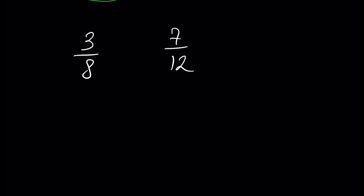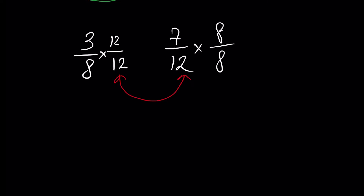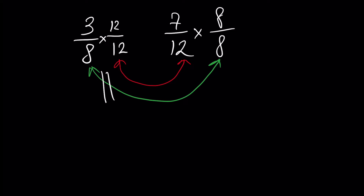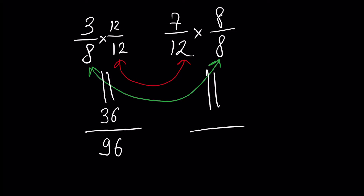That's why we multiply the first fraction — both numerator and denominator — by 12. We multiply 8 by 12 and also 3 by 12. The second fraction is multiplied by 8 — both numerator and denominator are multiplied by 8. As a result, the first fraction will be 36 over 96 and the second fraction will be 56 over 96.